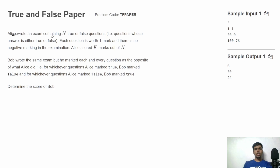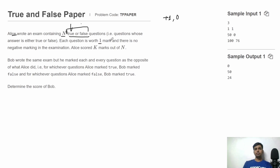Alice wrote an exam containing a total of N true or false questions. Each question can be answered in only two ways: correct or incorrect. Each question is worth one mark and there is no negative marking. If the answer is correct, we get plus one; otherwise we get zero. Alice scored K marks out of N.